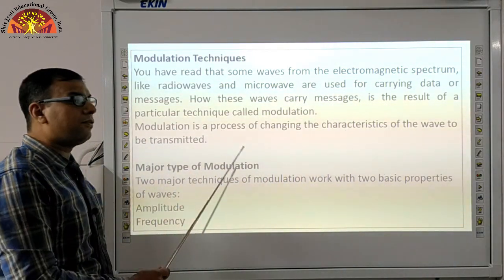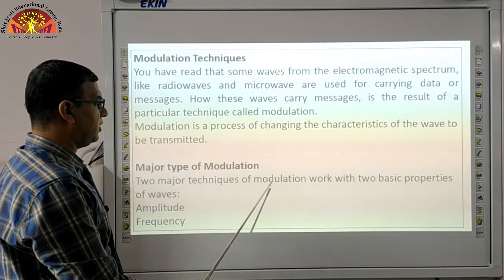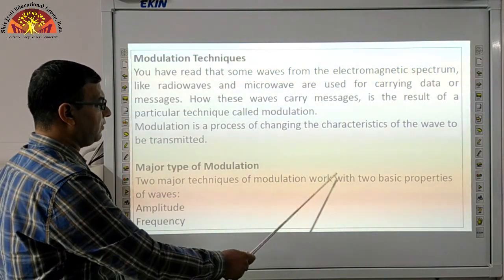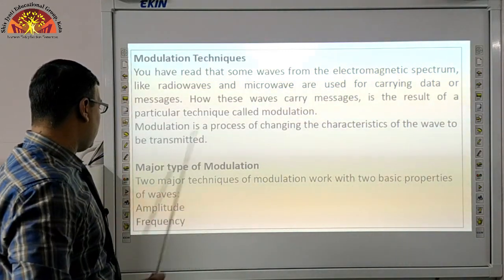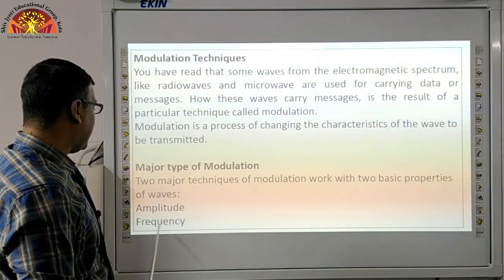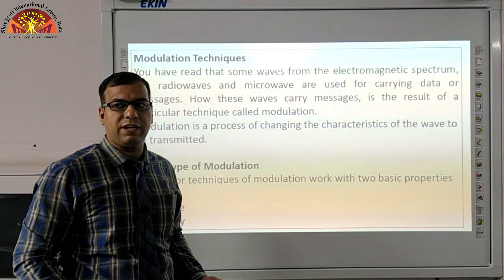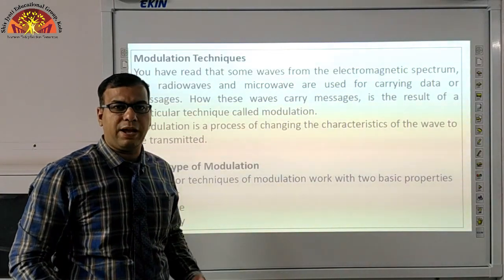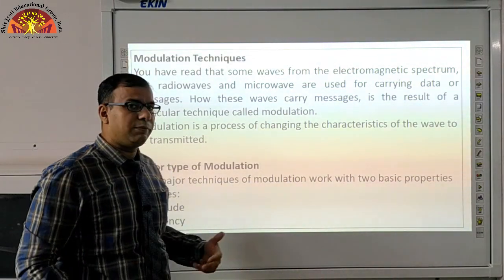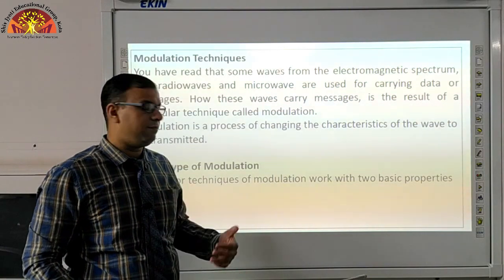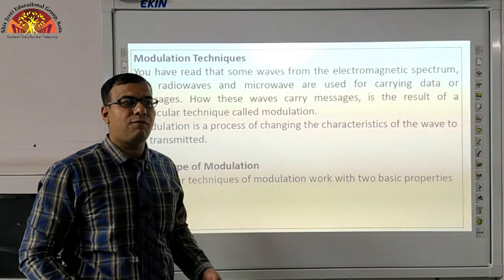Major types of modulation: Two major techniques of modulation work with two basic properties of waves — amplitude and frequency. So modulation works in two ways: on amplitude and on frequency. There are two techniques, which we will look at one by one — what is amplitude and what is frequency.